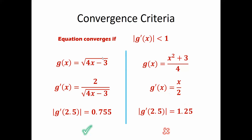Sometimes the criteria tells you it's not going to converge, but it will converge at a different initial value. Sometimes one form of the equation converges to one root, and another form converges to a different root. So starting at 2.5, the converging form will reach the closest root, while the other form might converge to a different, farther root.